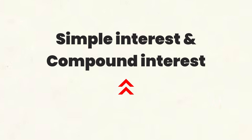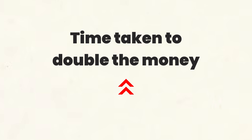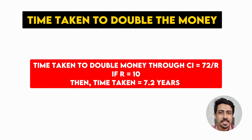The second shortcut is for simple interest and compound interest. Remember: the difference between simple interest and compound interest accumulated in two years is PR²/100², where P is the principal and R is the rate of interest. The difference between simple interest and compound interest in three years is 3PR²/100² + PR³/100³. The next shortcut is for time taken to double money invested through compound interest. The formula is 72/R, where R is the rate of interest. So if the rate is 10%, it will take approximately 7.2 years — so the answer is slightly more than 7 years.